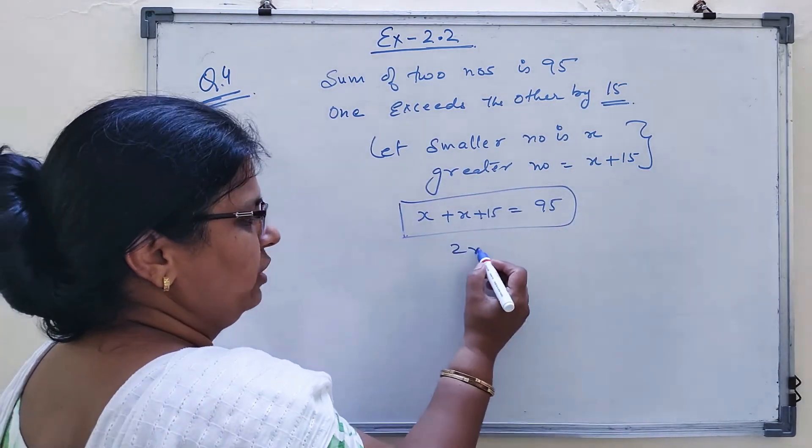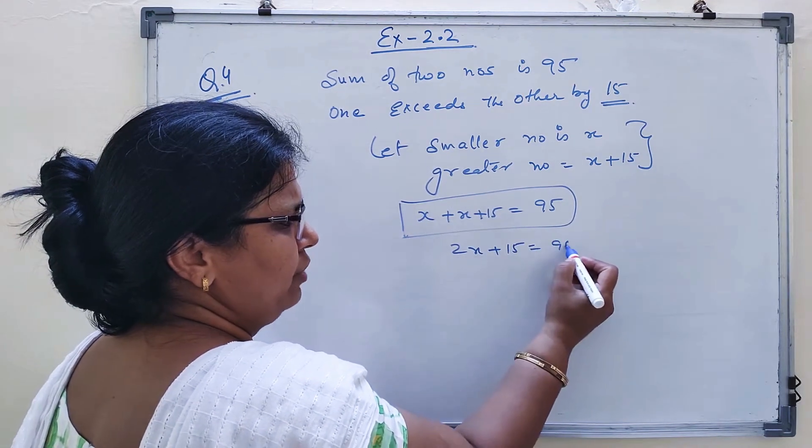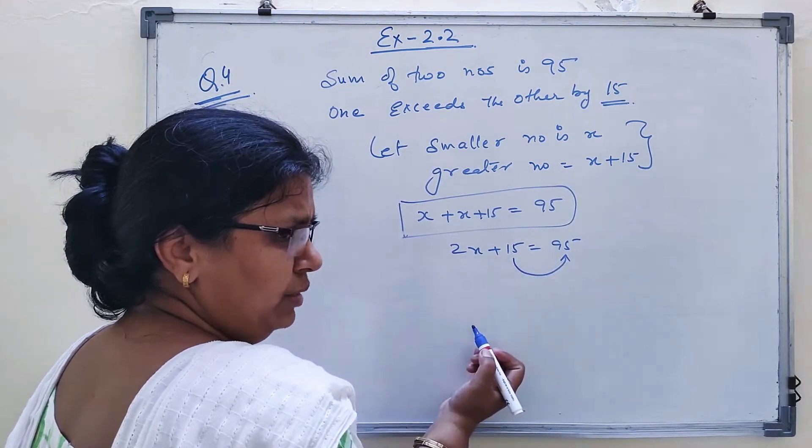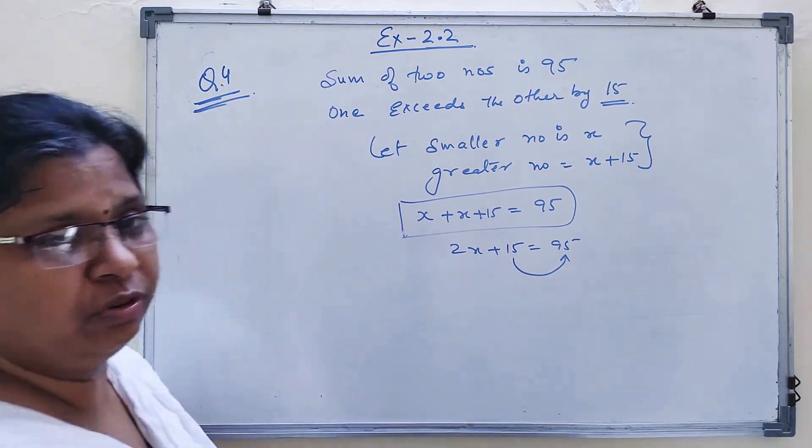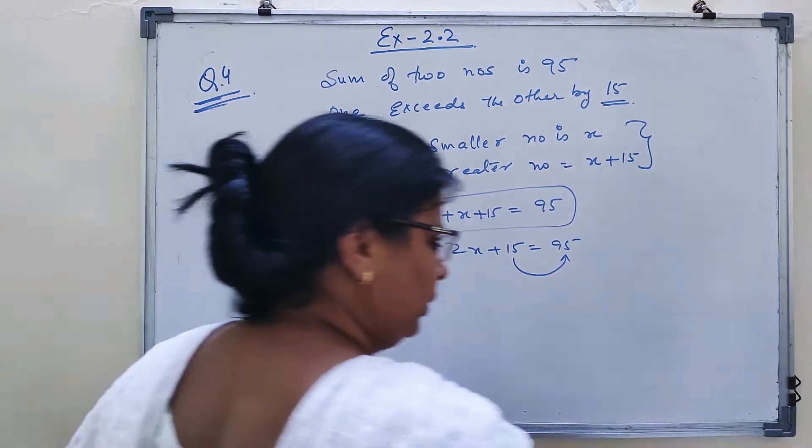You can simplify this equation to 2x plus 15 equal to 95. Transpose 15 and subtract. Then divide by 2. You'll get the value of x.